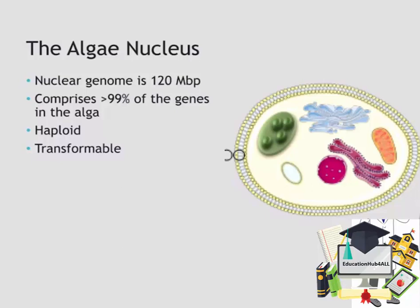The nuclear genome is located inside the algae nucleus. In this case, I'm specifically talking about Chlamydomonas reinhardtii, which is the organism we use in our lab, but this knowledge is translatable to any other green algae. The nuclear genome is roughly 120 million base pairs. For comparison, the typical bacterial genome is about three to six million base pairs and the human one is about three thousand million base pairs. Even though we have other genomes inside the cell — one inside the mitochondria and one inside the chloroplast — the nuclear genome comprises over 99% of genes in the algae.